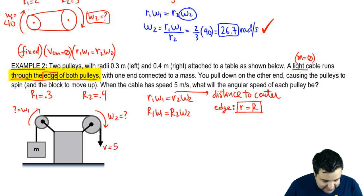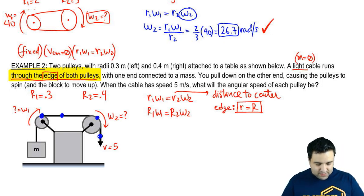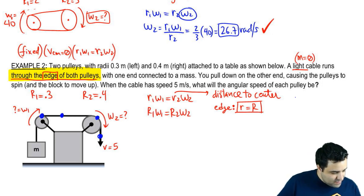What I want to remind you is that the velocity here is the same as the velocity here, which is the same as the velocity here, which is the same as the velocity at any point here. So we can write that V cable equals VT1 equals VT2.